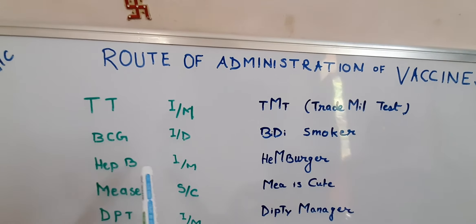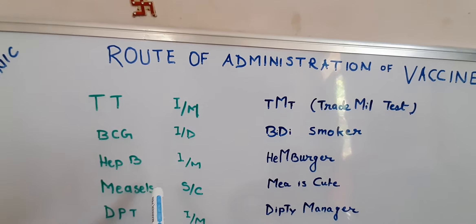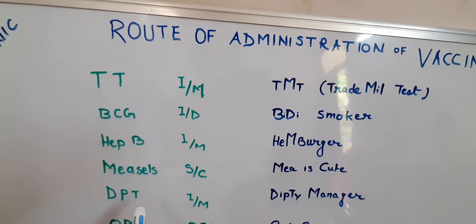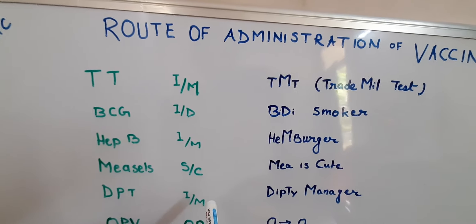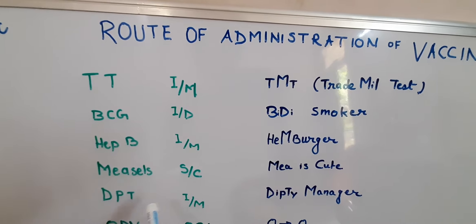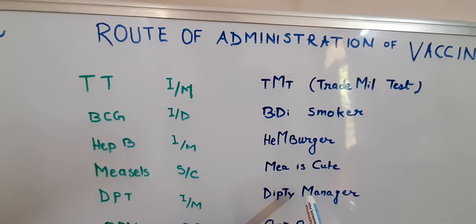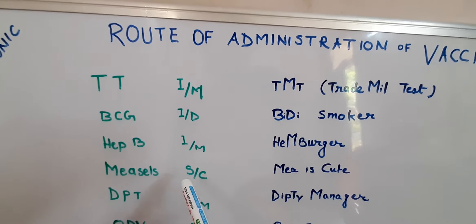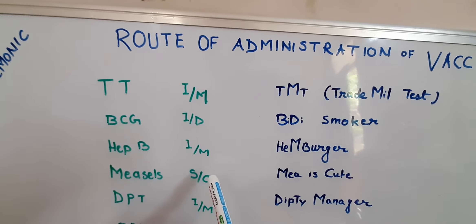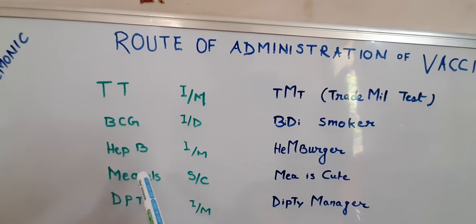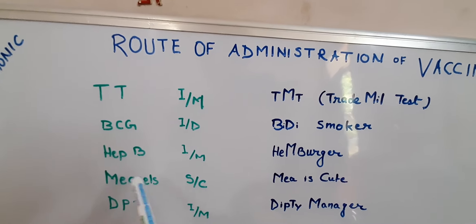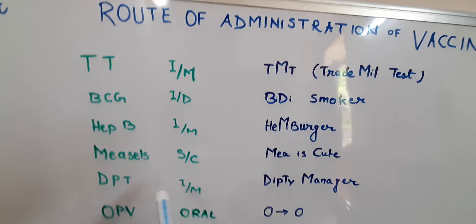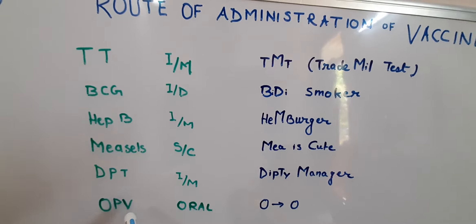For DPT, remember 'Deputy Manager' — D-P-T as Deputy, and M for intramuscular/Manager. For Measles, the deputy manager's girlfriend or wife is named Mia — M-I-A — where M is Measles and subcutaneous is remembered as 'cute,' giving us 'Mia is cute' — C for cutaneous/subcutaneous.